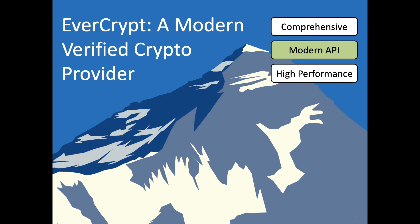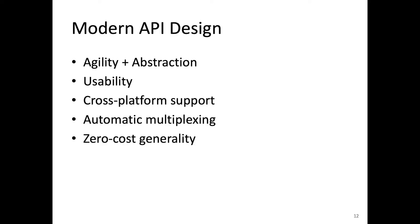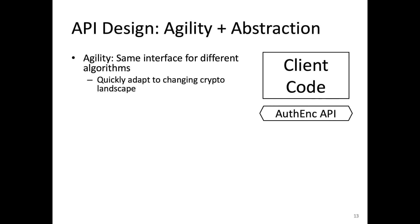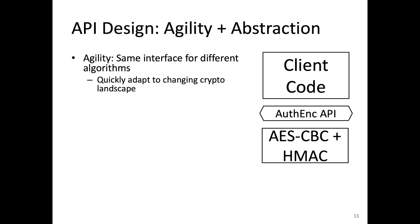In designing EverCrypt's API, we learned from other crypto providers like NACL and expanded these ideas in the context of verification. A modern crypto provider should offer an agile API, which makes it trivial to swap between different algorithms that provide the same cryptographic functionality. Client code is programmed against a single unified API — for example, for authenticated encryption — and can remain unchanged even if we upgrade from AESCBC and HMAC to something more modern, like ChaChaPoly or AESGCM.